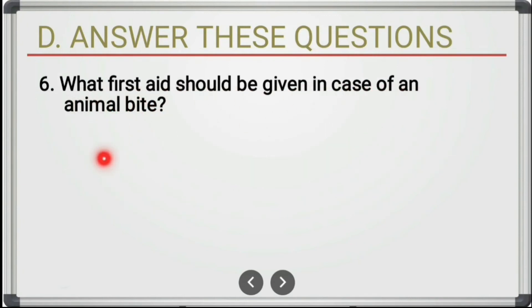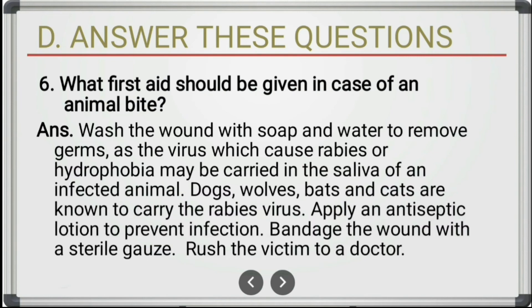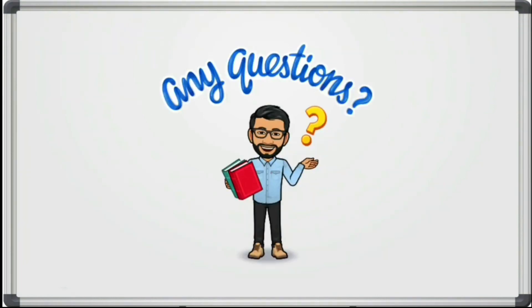Last long answer: what first aid should be given in case of an animal bite? Wash the wound with soap and water to remove germs, as the virus which causes rabies or hydrophobia may be carried in the saliva of an infected animal — dogs, wolves, bats, and cats are known to carry the rabies virus. Apply an antiseptic lotion to prevent infection, bandage the wound with sterile gauze, and rush the victim to a doctor.